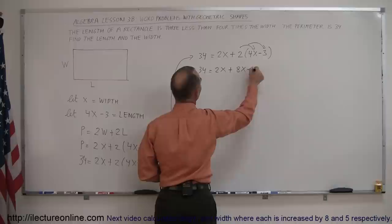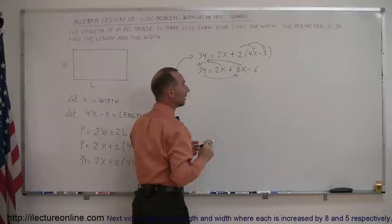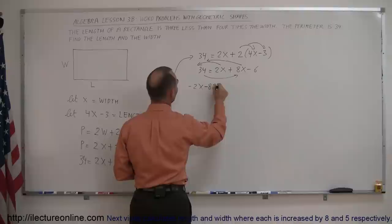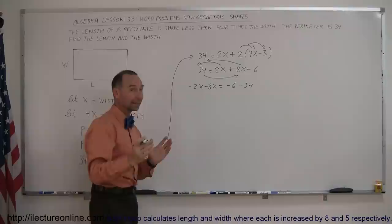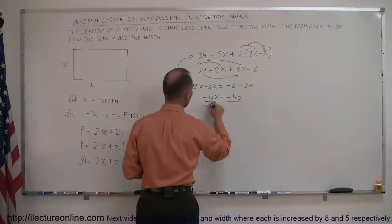Now the next step is to move all the terms with the x in it to the left side, everything else to the right side. So we're going to move the 2x and the 8x to the left and the 34 to the right. When you cross the equal sign, you change the sign. So this becomes minus 2x minus 8x equals minus 6 minus 34. Then combining like terms, minus 2x minus 8x is minus 10x equals minus 40. And then dividing both sides by the numerical coefficient in front of the x, which is minus 10, and we get x is equal to a positive 4.